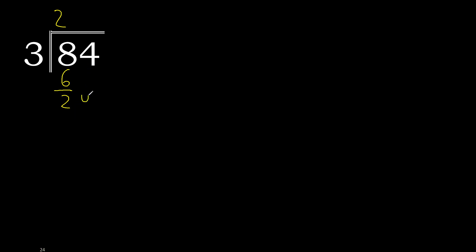Next: 24. 3 multiplied by 8 is 24. It is not greater. Subtract — remainder 0.